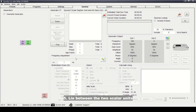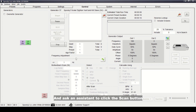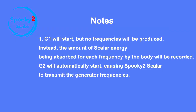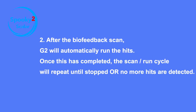To load the preset, lie between the two scalar units and ask an assistant to click the Scan button to start the biofeedback scan. G1 will start, but no frequencies will be produced; instead, the amount of scalar energy being absorbed for each frequency by the body will be recorded. G2 will automatically start, causing Spooky 2 Scalar to transmit the generator frequencies. After the biofeedback scan, G2 will automatically run the hits.